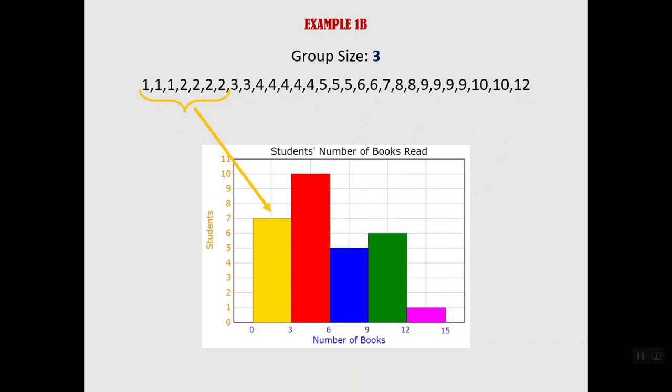So there are 7 data points within that one. The red one is 3, 4 and 5. 10 data points there.